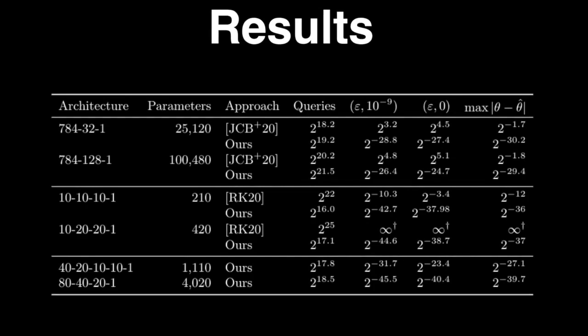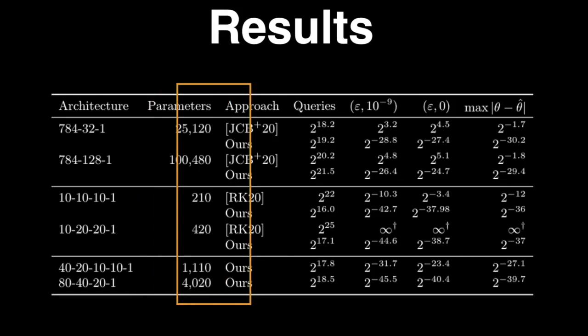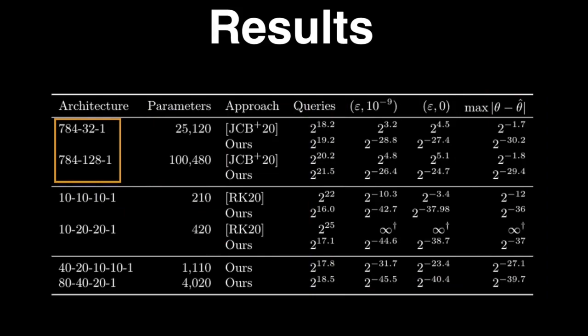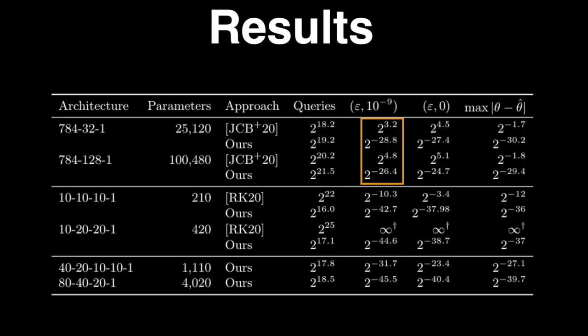To briefly summarize our results: here's the main table from our paper. On the left is the architecture — the number of neurons in each layer — then the number of parameters, the total number of weights. Then we have the number of queries we need to make of the model, and various ways of measuring extraction quality where lower numbers are better. Compared to prior work for one-layer neural networks, our paper requires roughly twice as many queries but is maybe two to the thirtieth times more precise — meaning the worst case error between our local copy and the remote model is at most two to the minus thirtieth in most settings. Compared to prior work on deep extraction with two or more layers, we are much more query efficient and extract models that are much more precise.